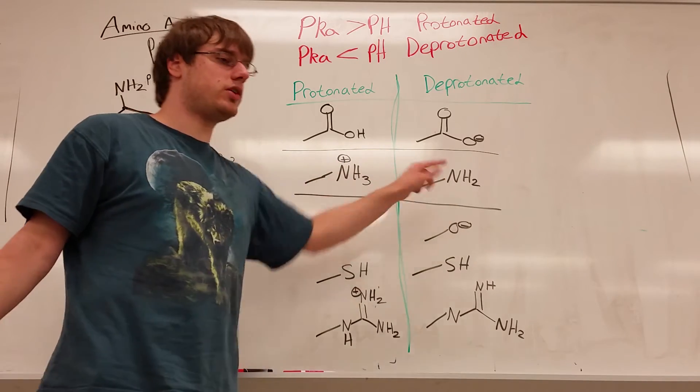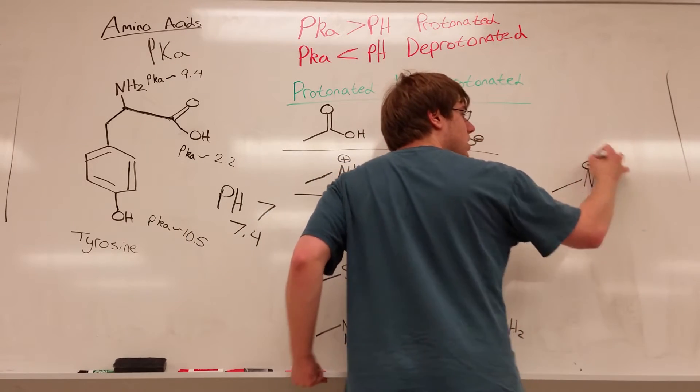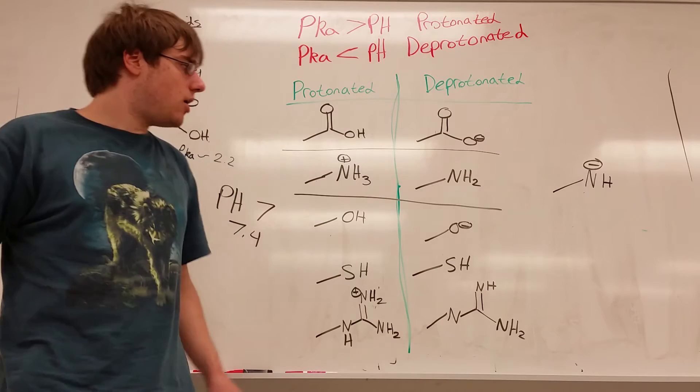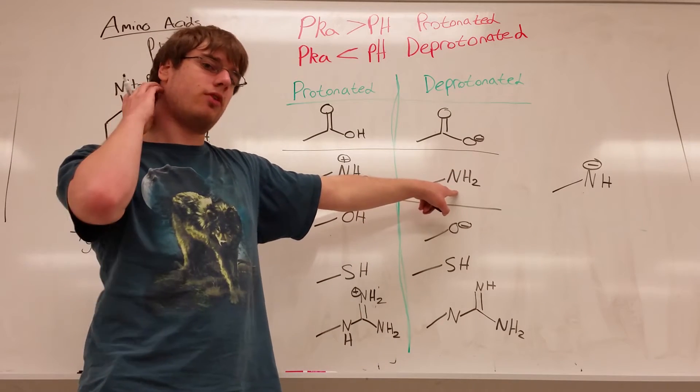The amino group in its protonated form becomes NH3, and that nitrogen becomes positive. Its deprotonated form is just NH2. Again, it's the difference of only a single proton. If you ever see an answer choice where that nitrogen is NH-, you know that is automatically incorrect because the nitrogen will never become negative. This is the most deprotonated form it will ever have.